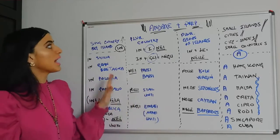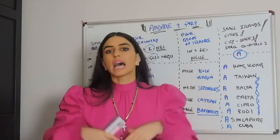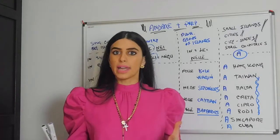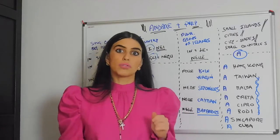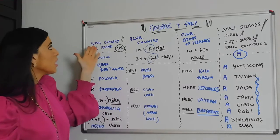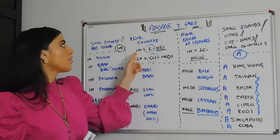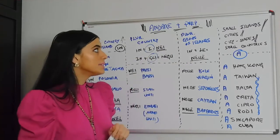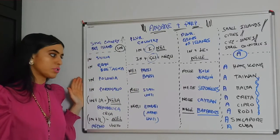So, in other words, when we use andare — but also vivere, abitare, arrivare, restare, rimanere, and many other verbs — this chart applies. IN is used with singular countries and big islands. NEI or NEGLI is used with plural countries. NELLE is used with plural groups of islands. And A is used with small islands, cities, city-states, and small countries. Hopefully that clarifies everything!